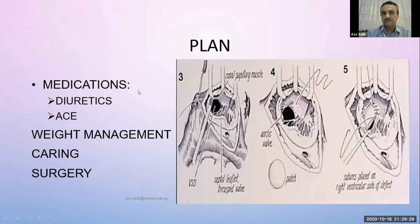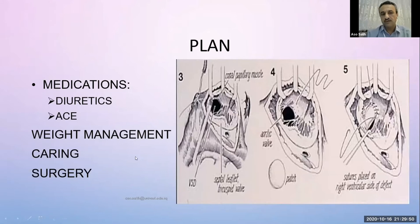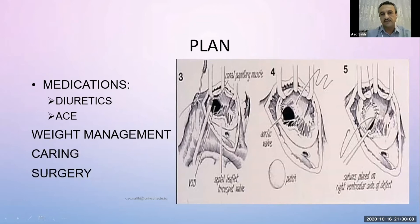The plan for this patient is to give medications in the form of diuretics and ACE inhibitors, and weight management guidance, because these patients are not gaining weight properly. Frequent short-duration feedings should be given since they tire easily. Avoid crowded places, and plan for surgery as soon as the weight and clinical condition allow.